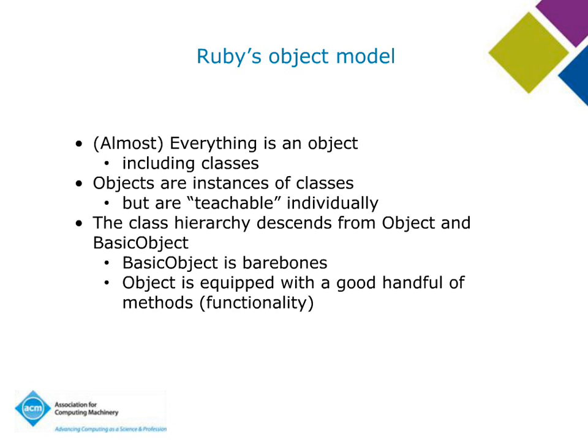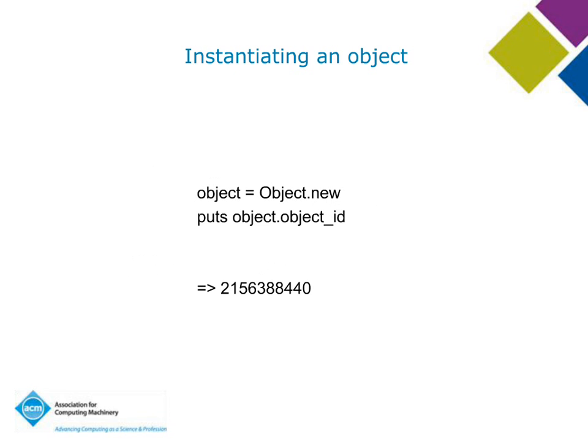The class hierarchy descends from the sort of big classes in the sky called Object and BasicObject. BasicObject has almost no methods; Object has a handful of methods common to every object because they're inherited from Object. To instantiate an object generally, you say the name of the class `.new`. Here I'm creating a vanilla generic object: `obj = Object.new`. I can ask for `obj.object_id` and get a number — every object has a particular object ID.